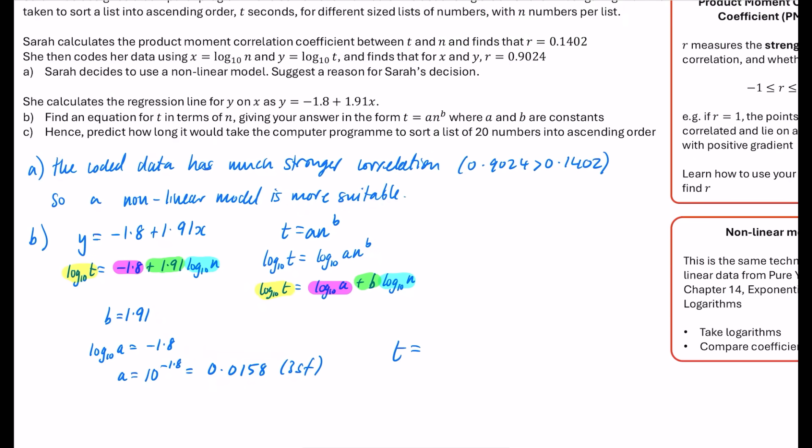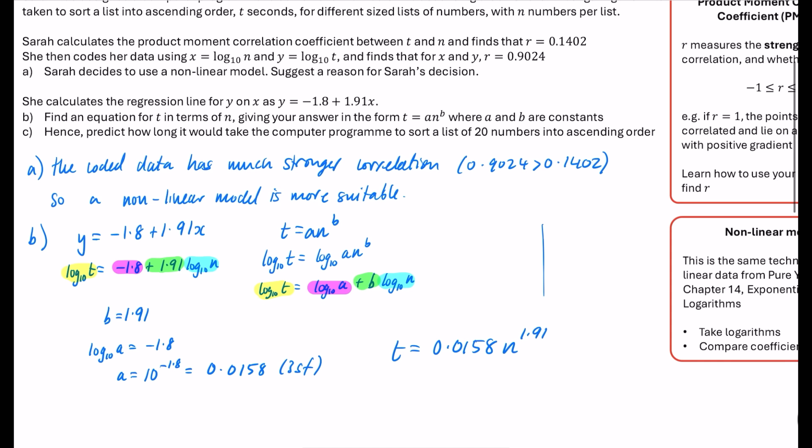Which means that our model is t equals 0.0158 times by n to the power of 1.91. This is almost like a quadratic, isn't it? It's almost like something n squared, which means that if we were going to plot the points, they would probably be making a kind of curved point like this, which is why the correlation coefficient, why the value of r was so low, because they weren't near a straight line, but then suddenly they're much closer to a straight line here.